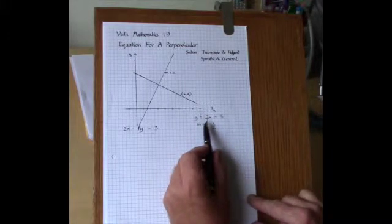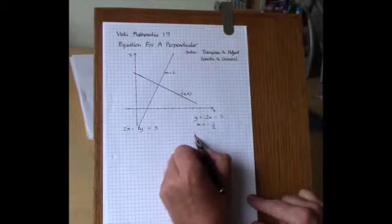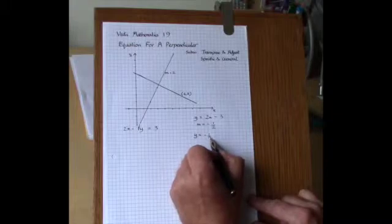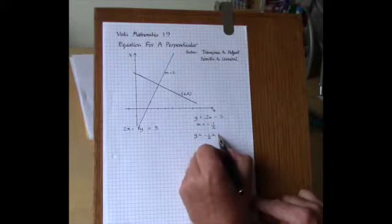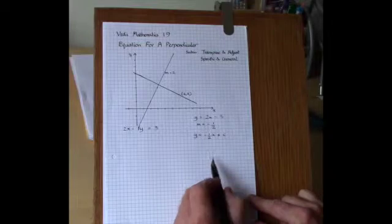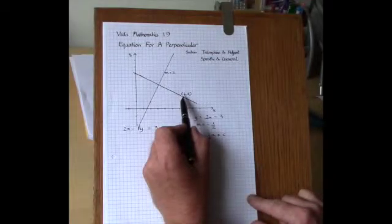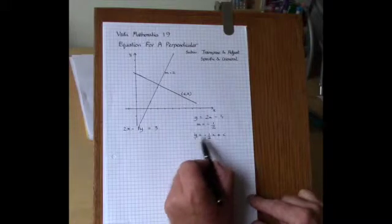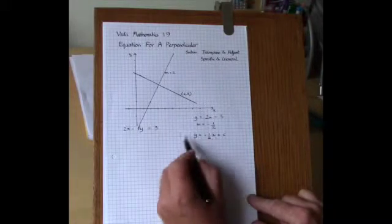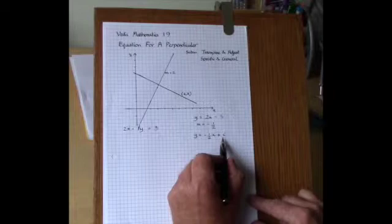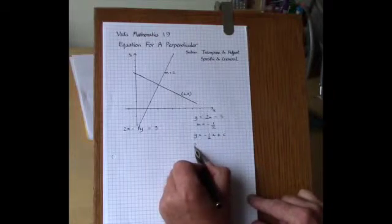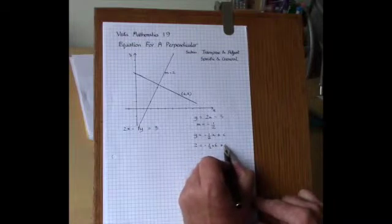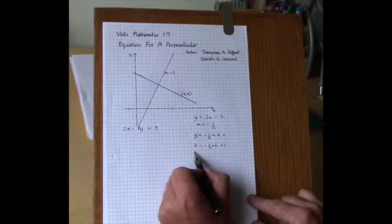And so we put this new gradient into the equation y is minus 1 half x plus c. We've got to find the value of c. So we take the coordinates 6 and 2 and substitute them into this equation. y is 2, x is 6 to find the value of c. So 2 equals minus 1 half times 6 plus c. We can solve this very easily.